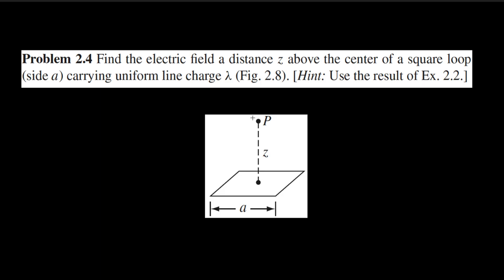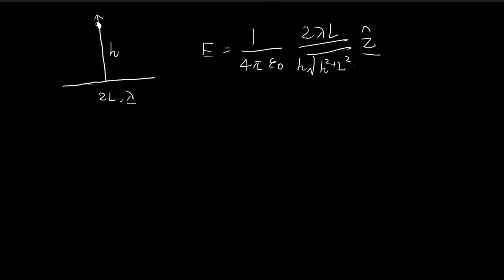In this problem, we're interested in finding the amount of electric field at point P. In order to solve this problem, we're going to use a result that Griffiths derived earlier — specifically, we're going to use the result of that example.